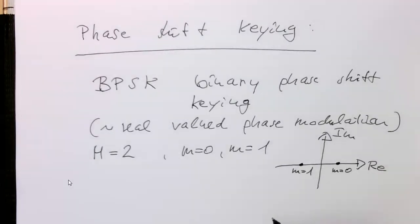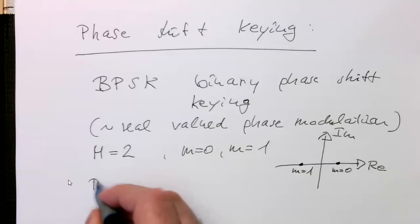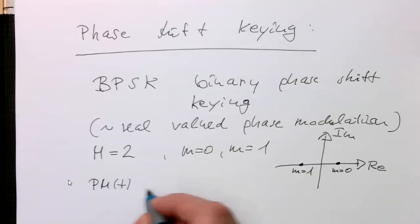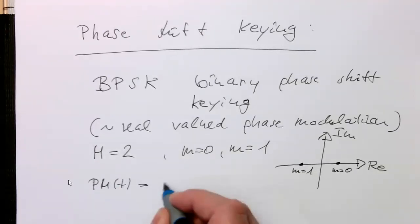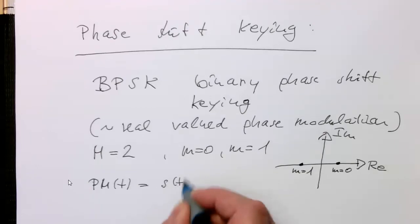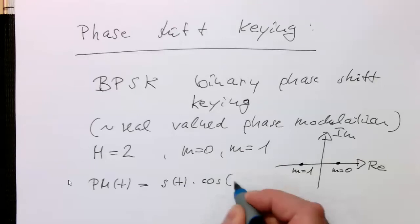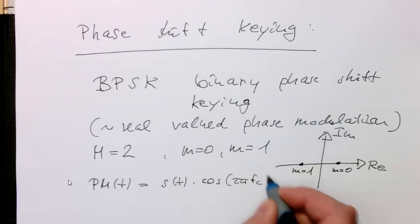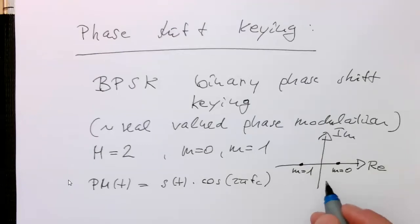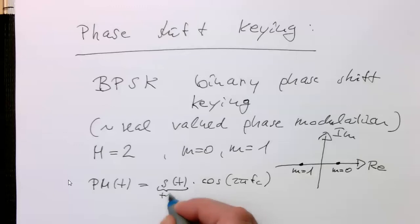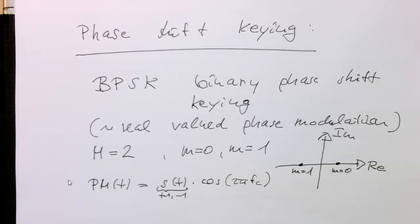And remember, this was our starting point for our phase modulation when we had our PM of t equals S of t multiplied by cosine of 2 pi fc. And the S of t was either plus 1 or minus 1. So we're getting this phase shift.